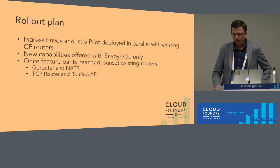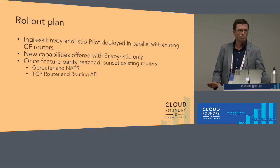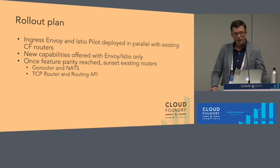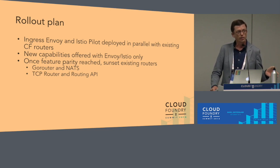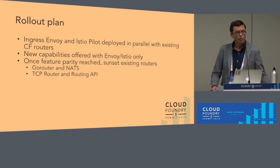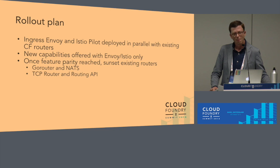The new Istio-based routing control plane is being rolled out in parallel. There is absolutely no deprecation timeline or sunset timeline for the existing Go Routers and TCP Routers — we know many folks are getting great outcomes from those production-grade services. The Envoy and Istio control plane is being brought up in parallel, and we recommend that app developers and operators who want to leverage the new capabilities do so by using a different DNS name. Eventually, once we reach parity, we would identify a deprecation timeline for Go Routers and TCP Routers. We mean to do the work necessary to support a quarter of a million containers.